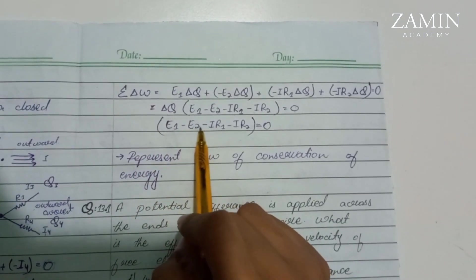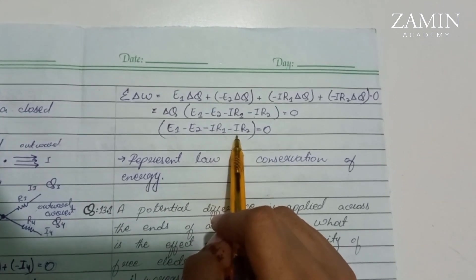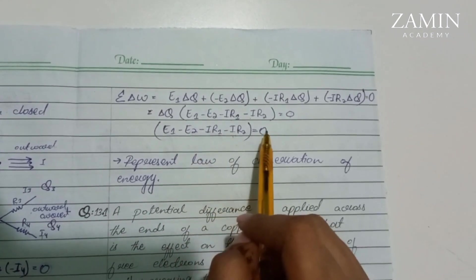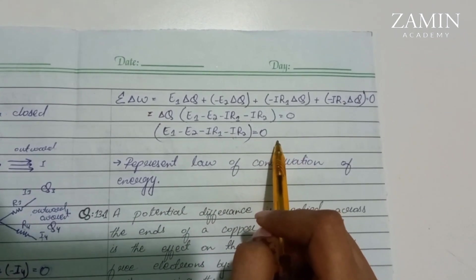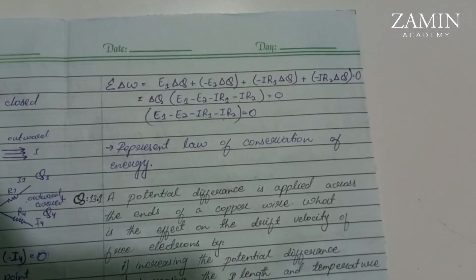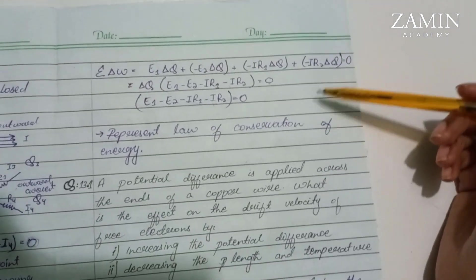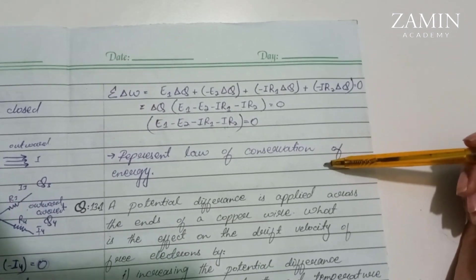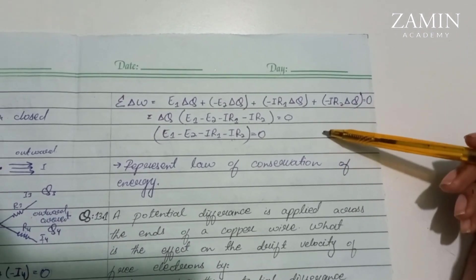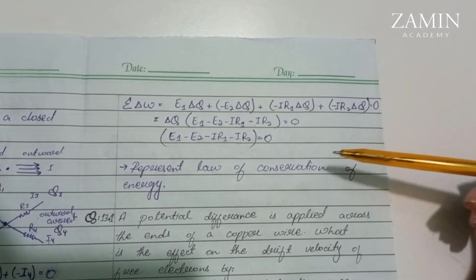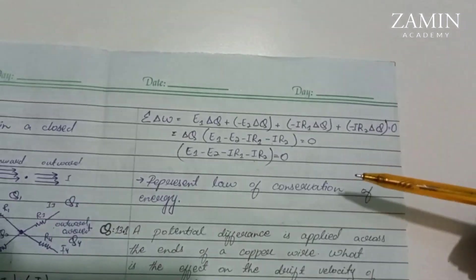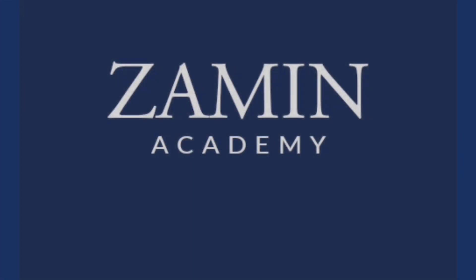Delta q is constant, so we can cancel it. E1 minus E2 equals IR1 plus IR2. This is our second Kirchhoff rule, and this law represents conservation of energy.